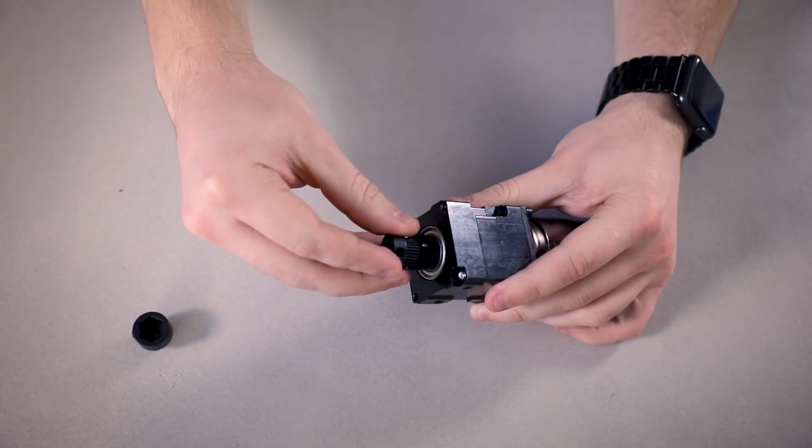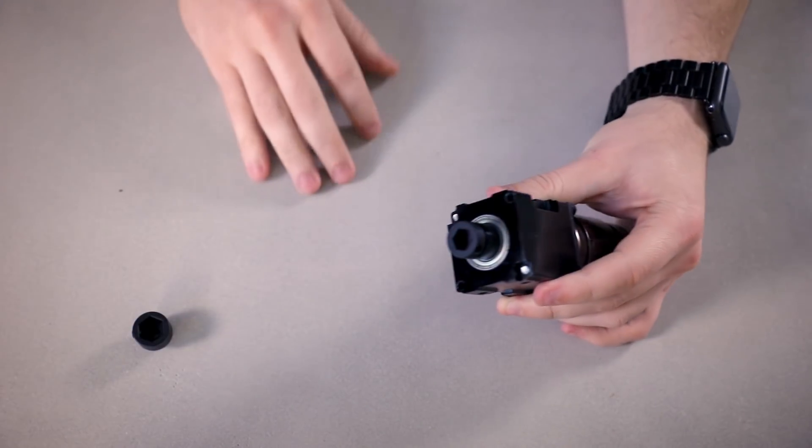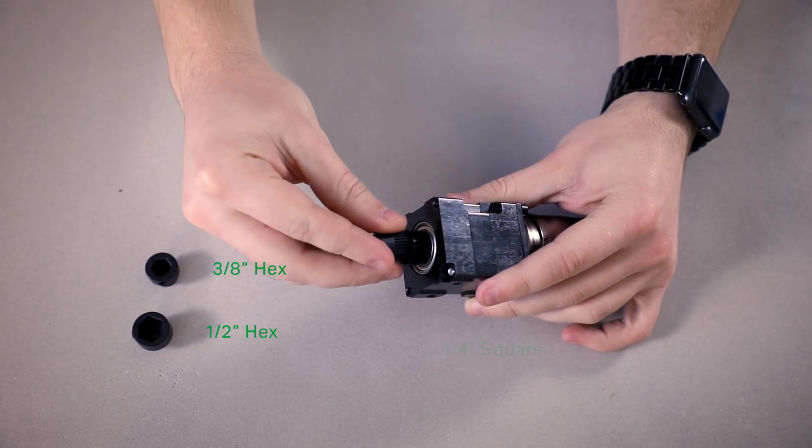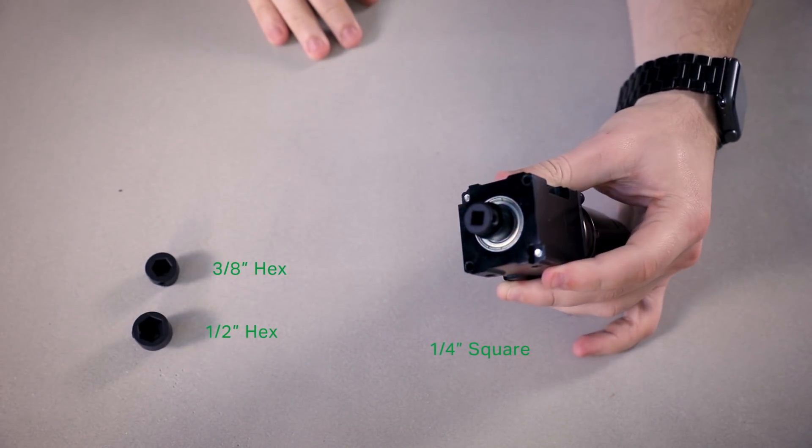So, why is it universal? Well, each kit comes with three different adapters. One for half-inch hex, one for three-eighths inch hex, and another for quarter-inch square, an added bonus for all the FTC teams out there.